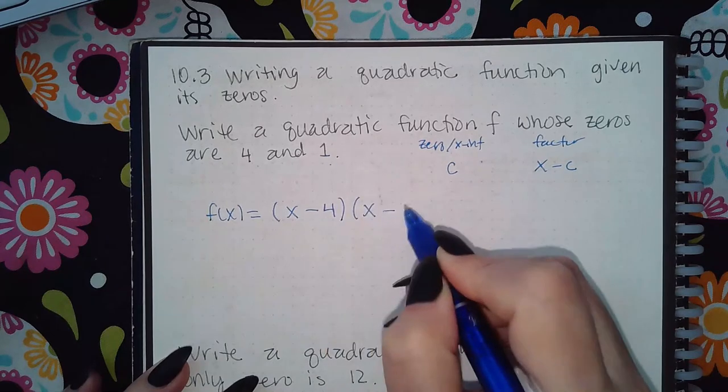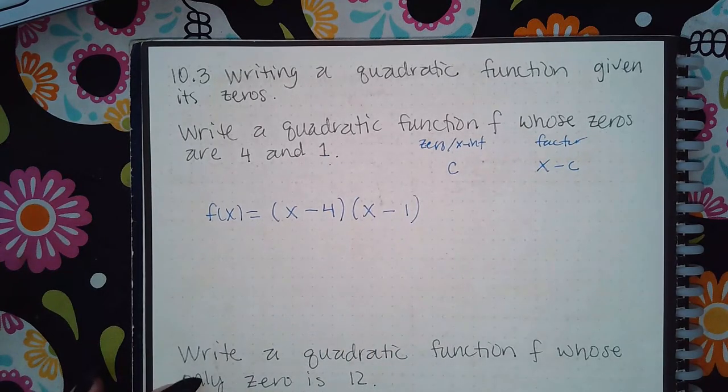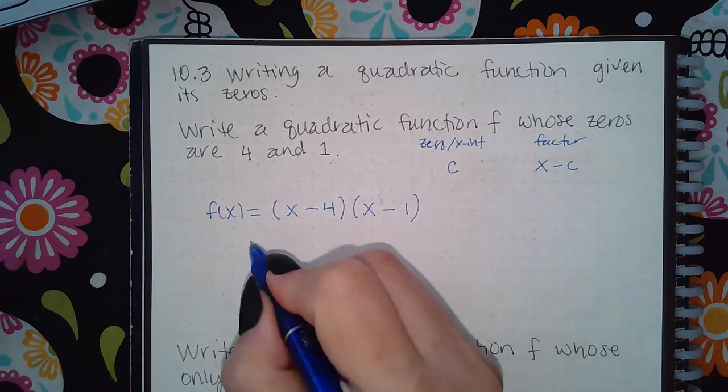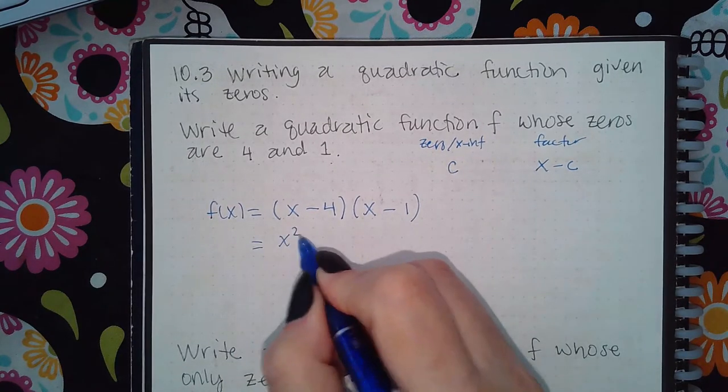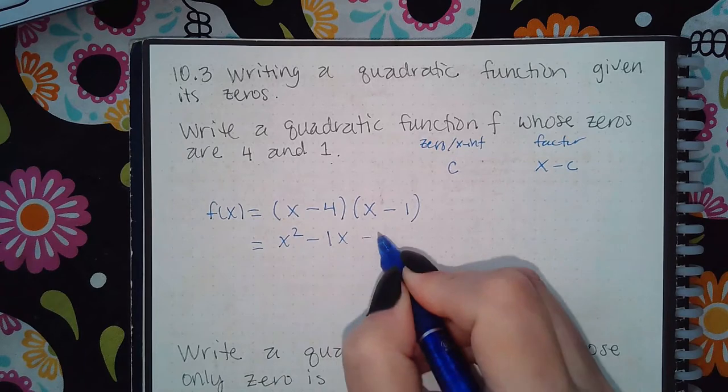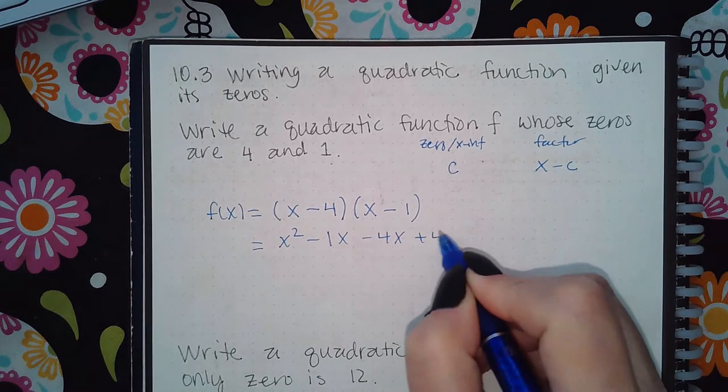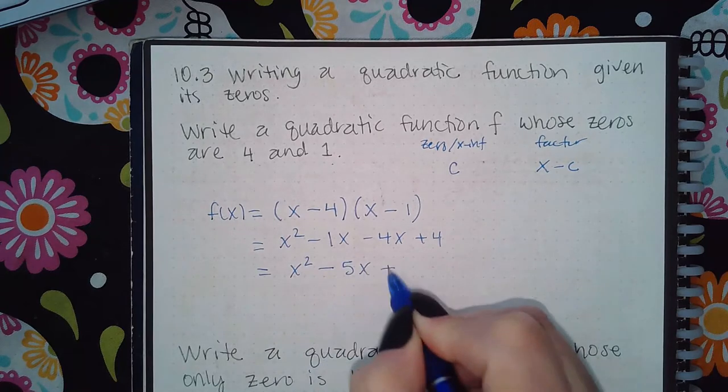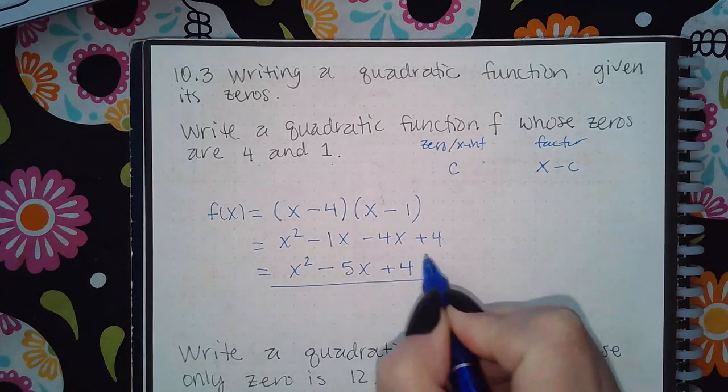If you FOIL this out, you will get x squared minus 1x minus 4x plus 4, which is x squared minus 5x plus 4. This is the quadratic function they are looking for.